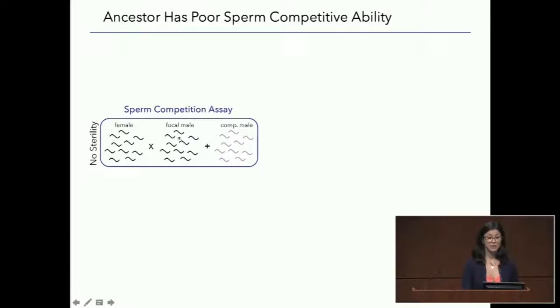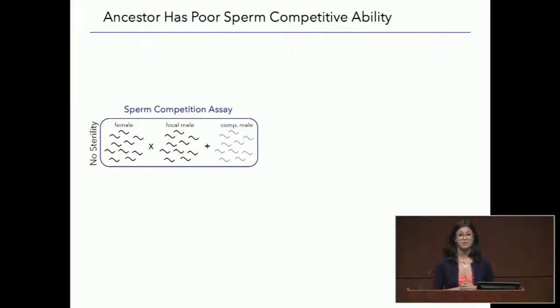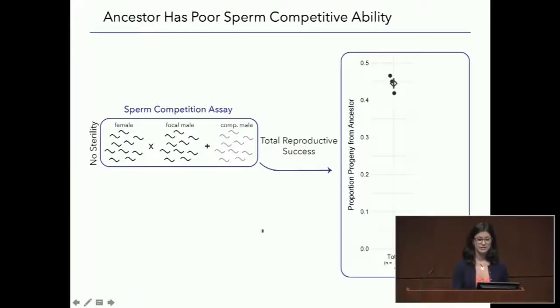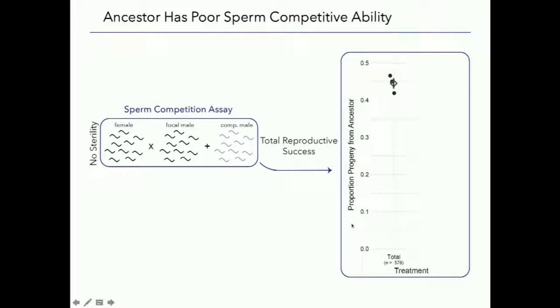This ran for 10 selective generations, 30 generations total. The output I'm showing today is how sperm competitive ability has improved over time, as a function of how total reproductive success changes — so we'll be looking at a lot of sperm competition assay data. For these assays, a population of females is mated with a population of our males of interest plus competitors added at a one-to-one ratio. If sterility is not induced in these males of interest, we're measuring total reproductive success. Our ancestral male has a total reproductive success of around 45% — not fantastic but not too terrible.